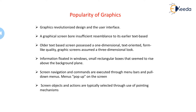Information floated in windows — small rectangular boxes that seemed to rise above the background plane. Windows could not float above other controls, and the controls appeared to rise above the screen and move when activated. Screen navigation and commands were executed through menu bars and pull-down menus. This is how the GUI was introduced and what kinds of objects it accomplished.